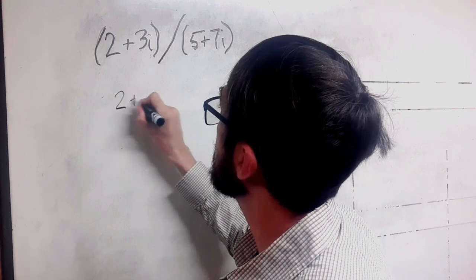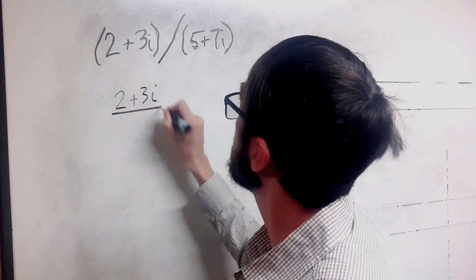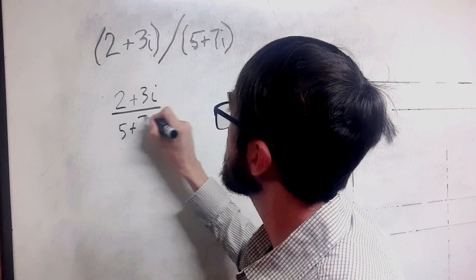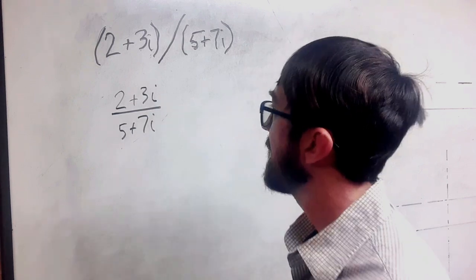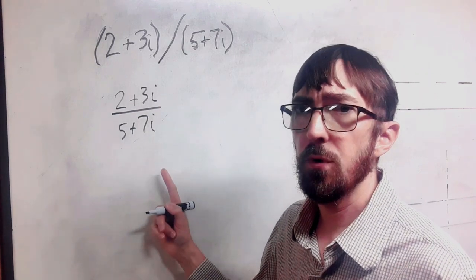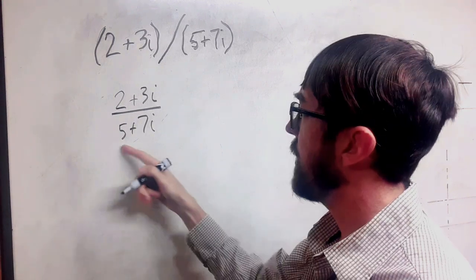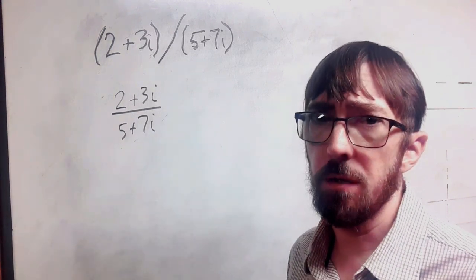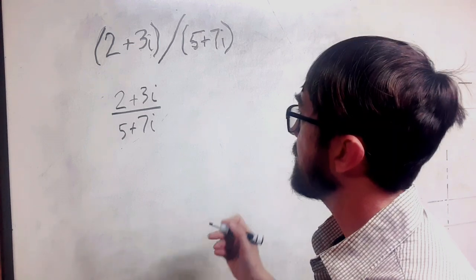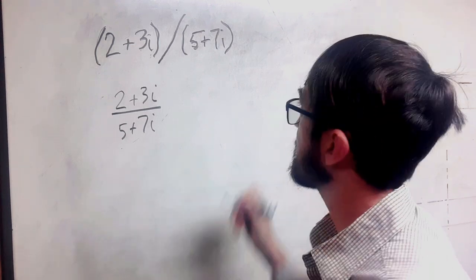So we want 2 plus 3i divided by 5 plus 7i. And we really don't have a conceptualization in our minds about what it means to divide by a complex number. But we can eliminate that by using the complex conjugate.